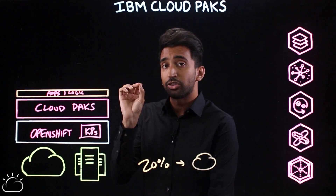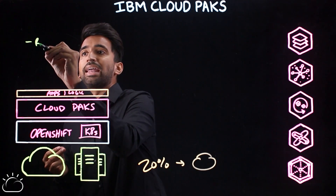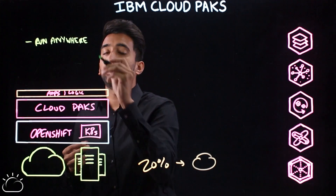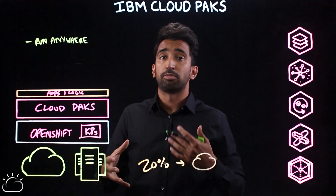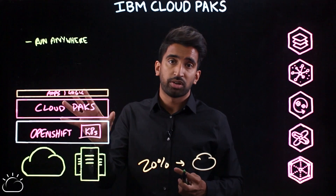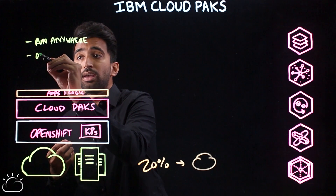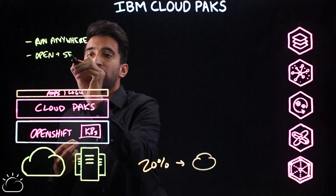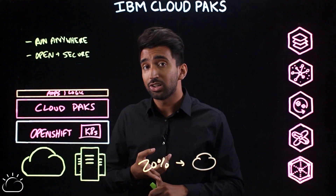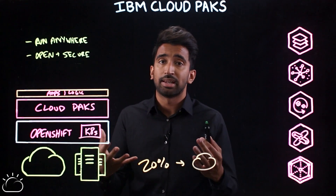There are three key tenets to Cloud Packs I want to outline. First, they can run anywhere. Regardless of where your OpenShift platform is running — on-prem, public or private clouds, or even on IBM Cloud — you can run those Cloud Packs in a fully supported fashion anywhere. Next, they're open as well as secure. They're built and optimized for OpenShift, which is based on open source technology and principles. This allows you to avoid vendor lock-in and run these applications and logic anywhere.